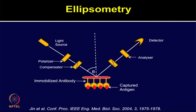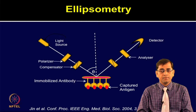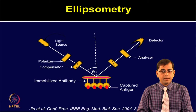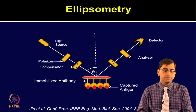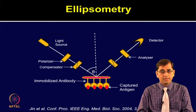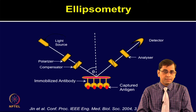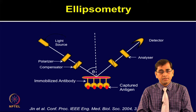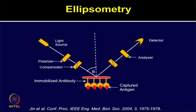In this slide, I have shown you a configuration for an ellipsometry-based label-free technique. A monochromatic laser light, linearly polarized by the polarizer, is passed through a compensator to produce elliptically polarized light. This light is reflected from the sample surface and again becomes linearly polarized, which is detected by an analyzer filter. The reflected light intensity is monitored with a photodetector.